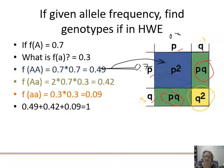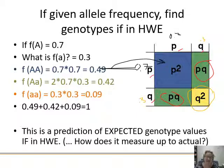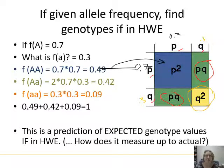This is a prediction of expected genotype values if we're in Hardy-Weinberg equilibrium. It could be different — we could have way more heterozygotes than expected, maybe there's a lethal allele so we see none of the homozygous recessive. But this is our baseline that we can compare things to and say whether or not it's different.